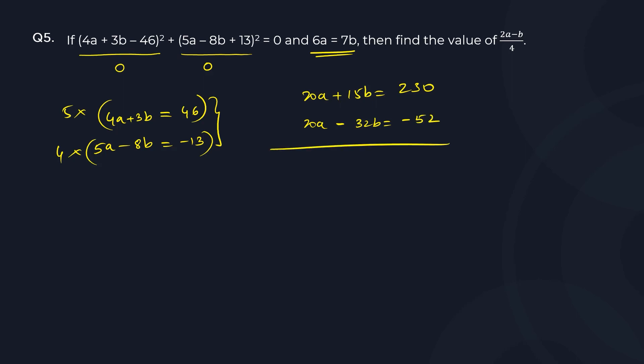Now I can subtract them. So this gets cancelled. 15 plus 32 is 47b equal to 282, or b equal to 282 divided by 47.